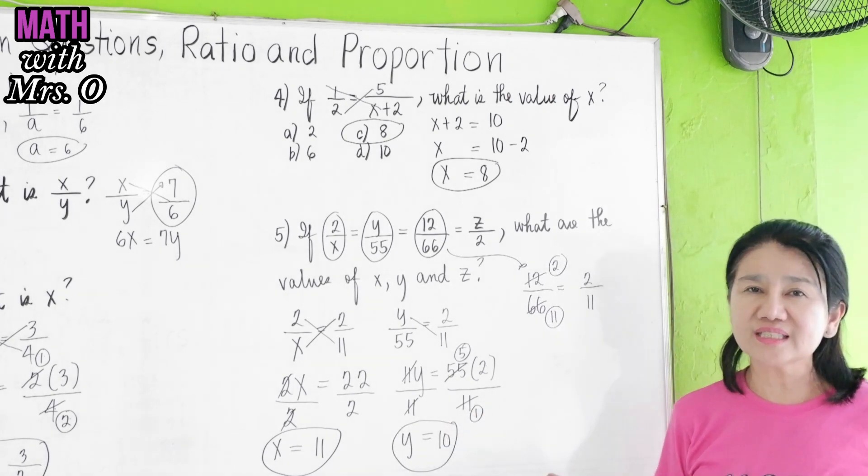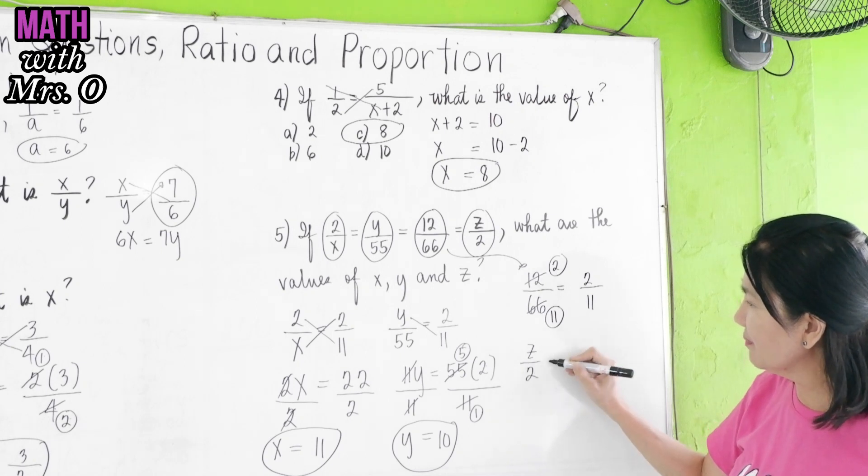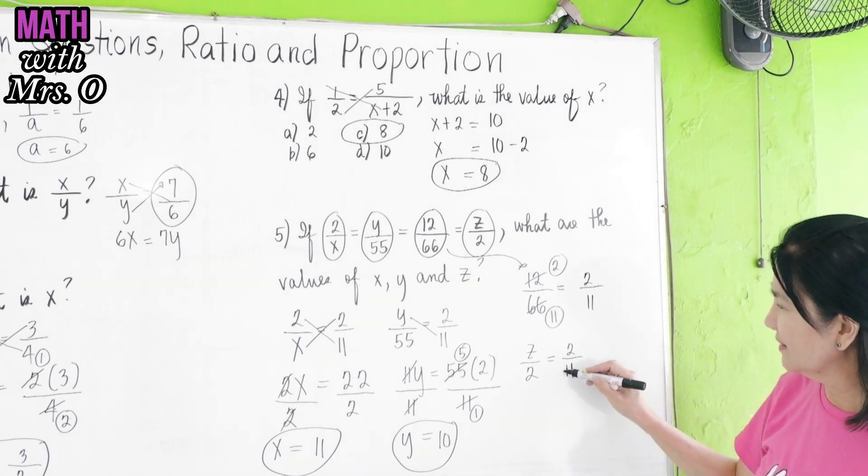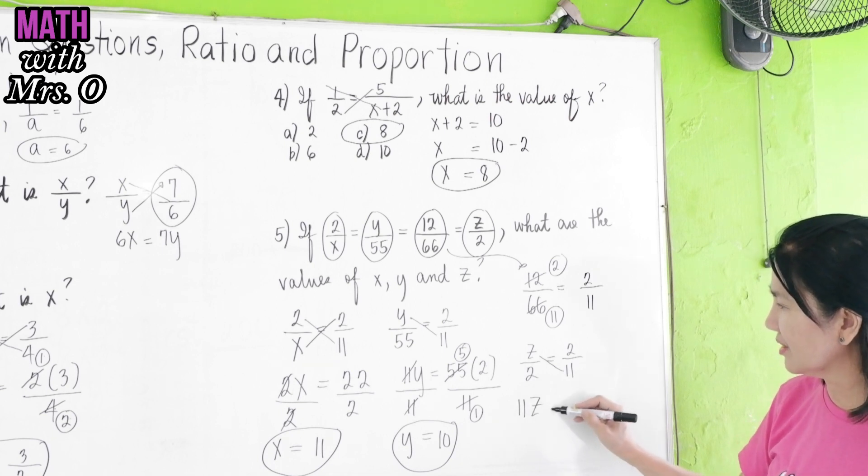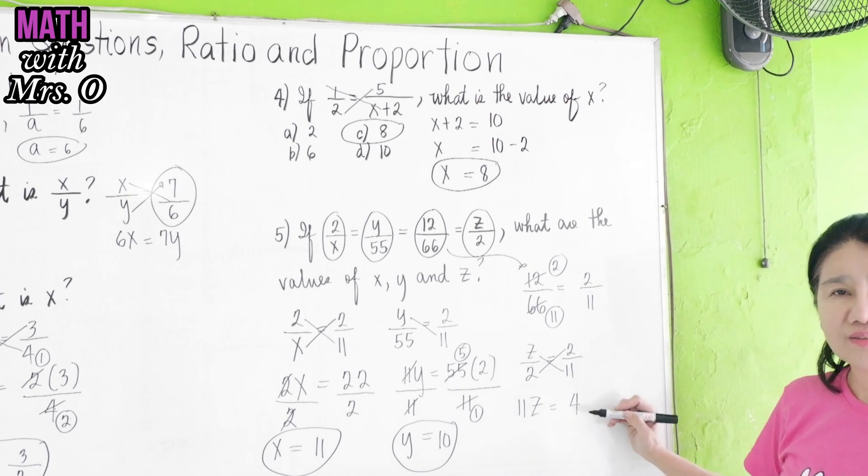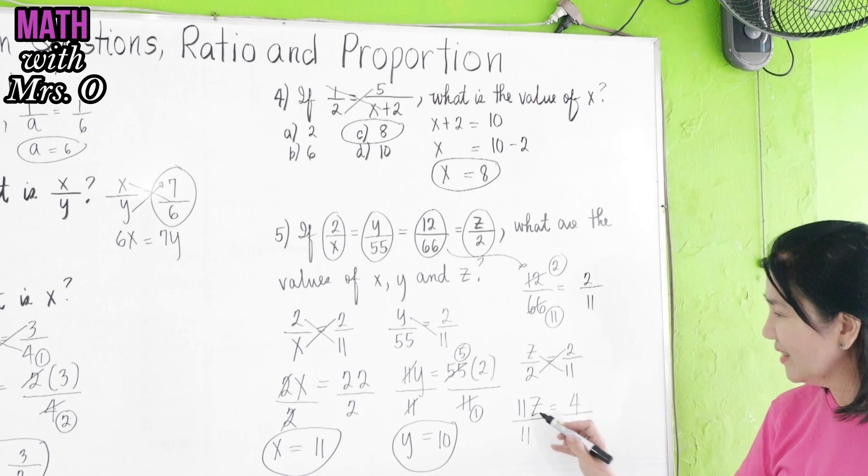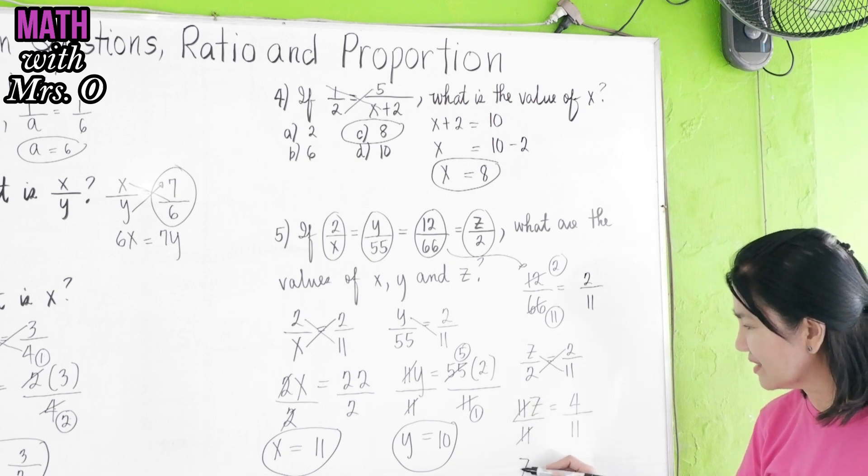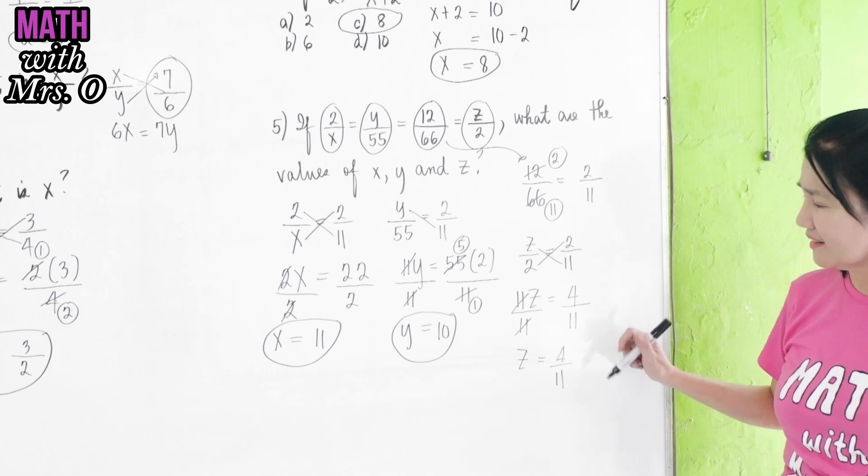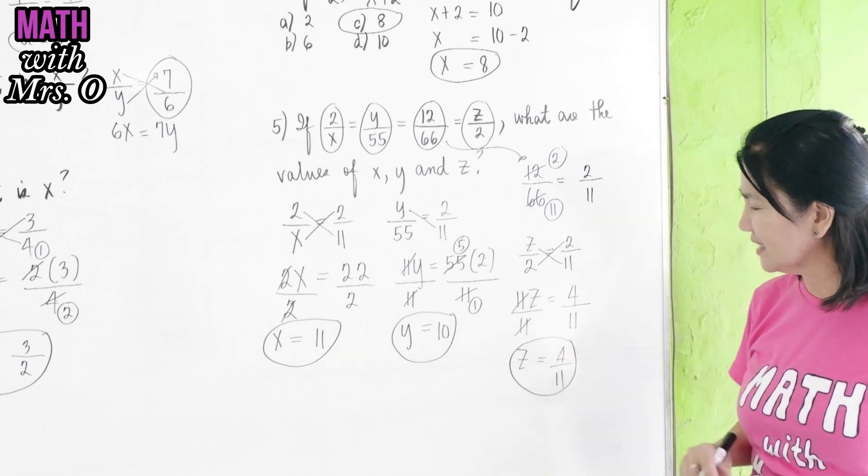So, how do we solve for z? Again, let's copy this ratio, z over 2. We can equate it with the simplified value of 12 over 66. Cross multiply. We have 11z, or 11 times z, equals 2 times 2 is 4. To isolate z again, divide both sides by 11. We can cancel 11, and 11, we get z is equal to 4 over 11. Can we still simplify 4 over 11? Not anymore. So, there we have our answers. x equals 11, y equals 10, and z equals 4 over 11.